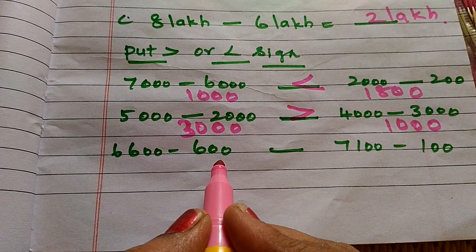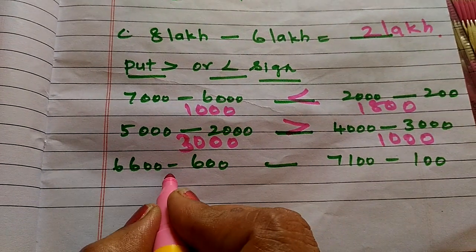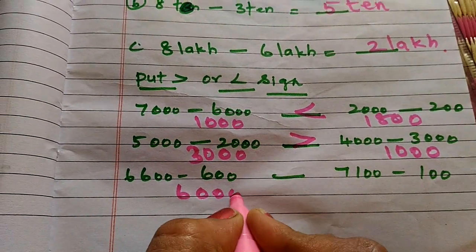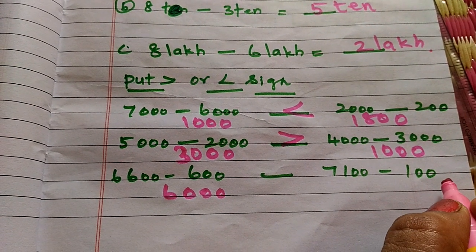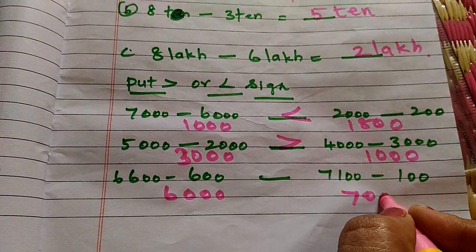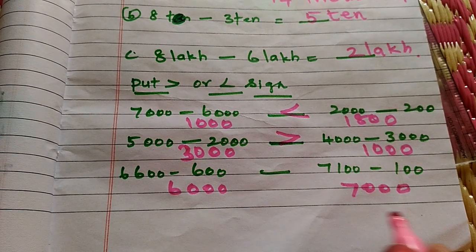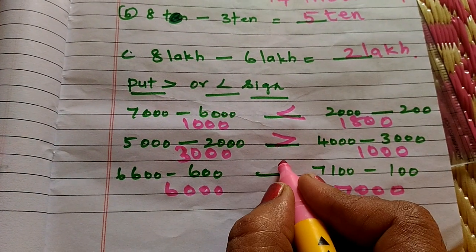Next problem: 7,100 minus 100 equals 7,000. Which one is the bigger number? 7,000 is the bigger number.